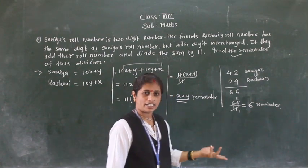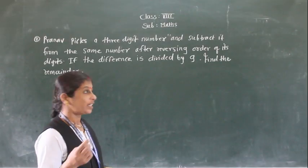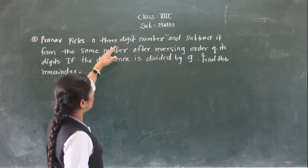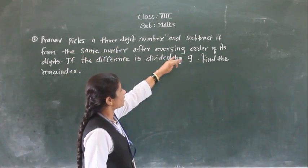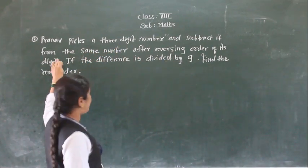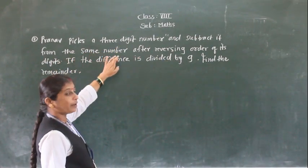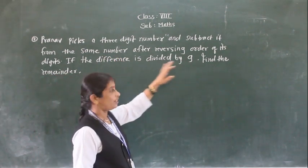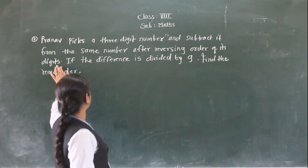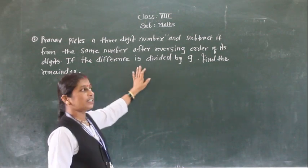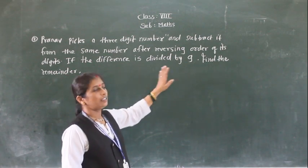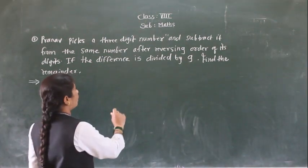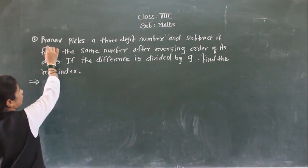Now we will see the next example. Pranam picks a 3-digit number and subtracts it from the same number after reversing the order of its digits. If the difference is divided by 9, find the remainder.